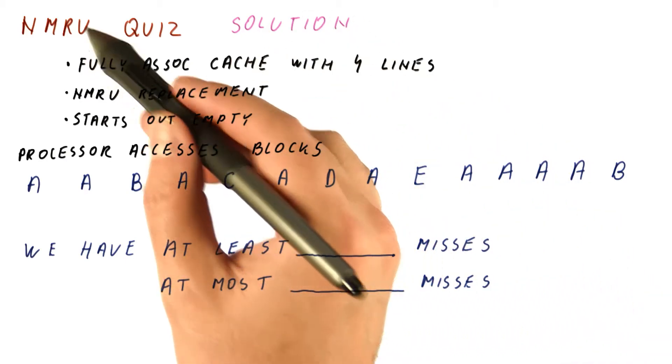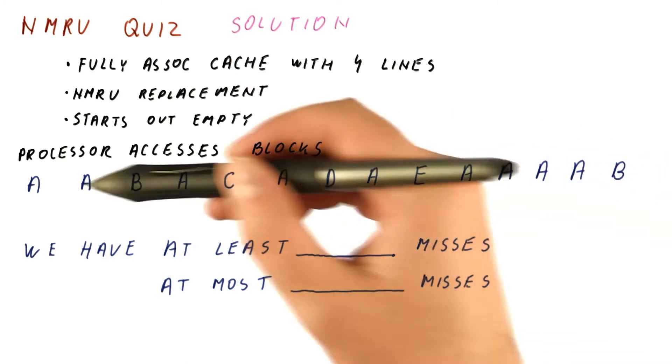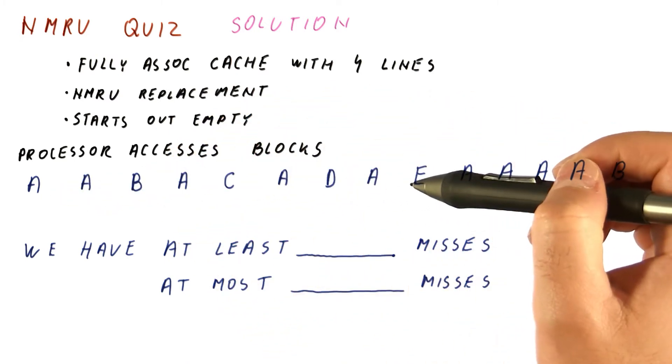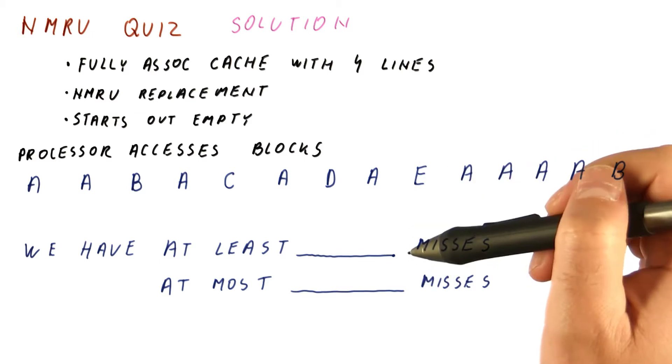Let's look at the solution to our not most recently used replacement policy quiz. We have these accesses, and now let's see which ones might be hits and which ones might be misses.